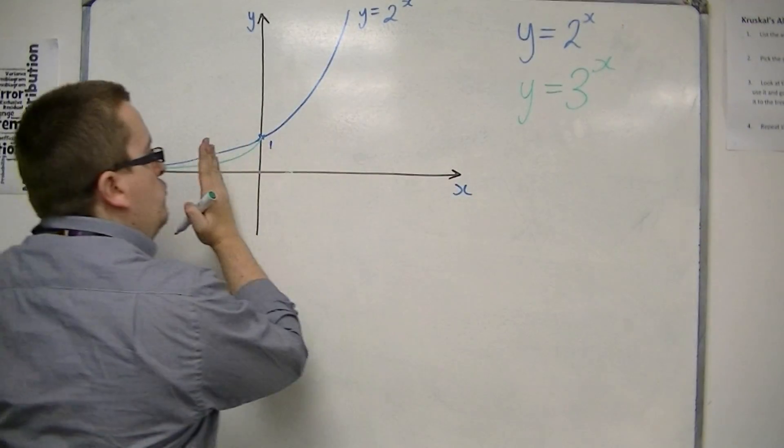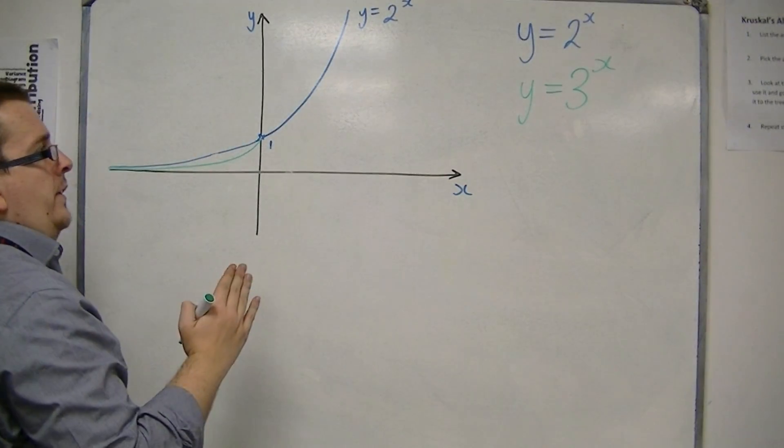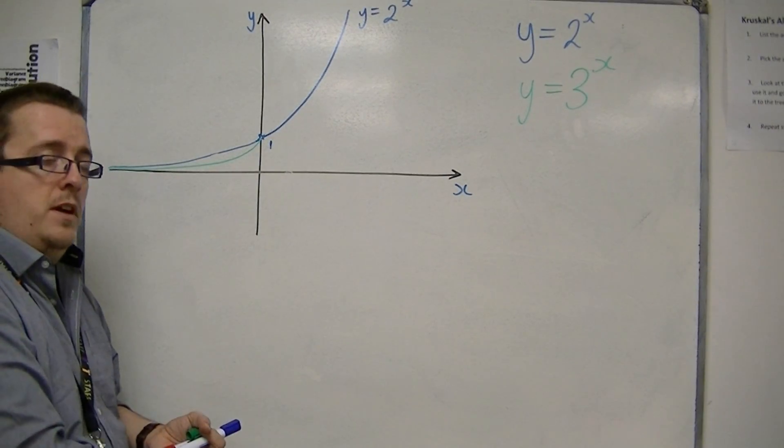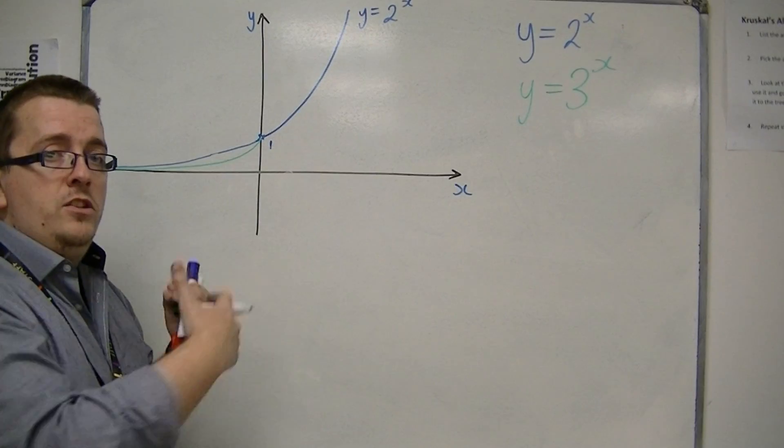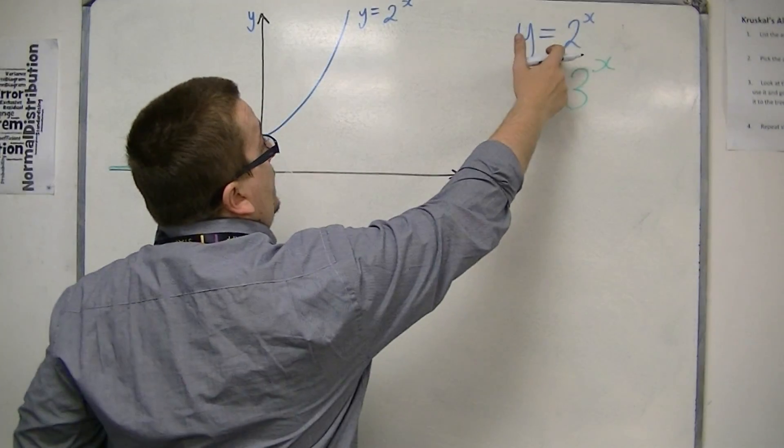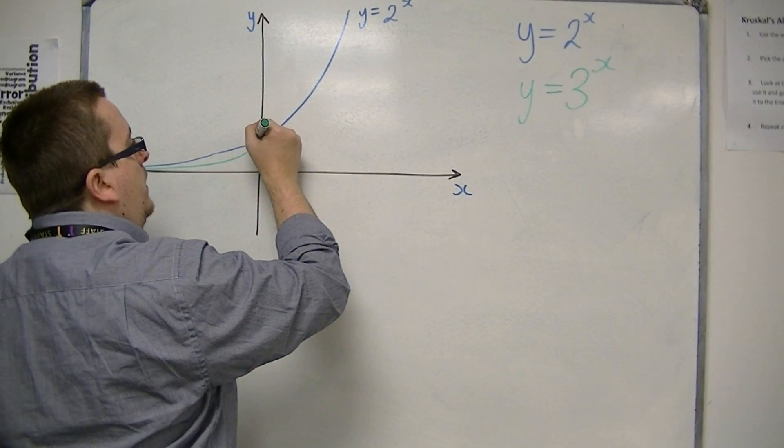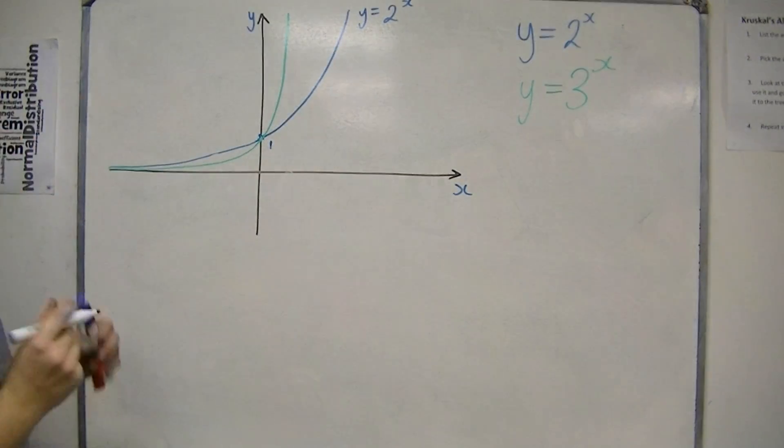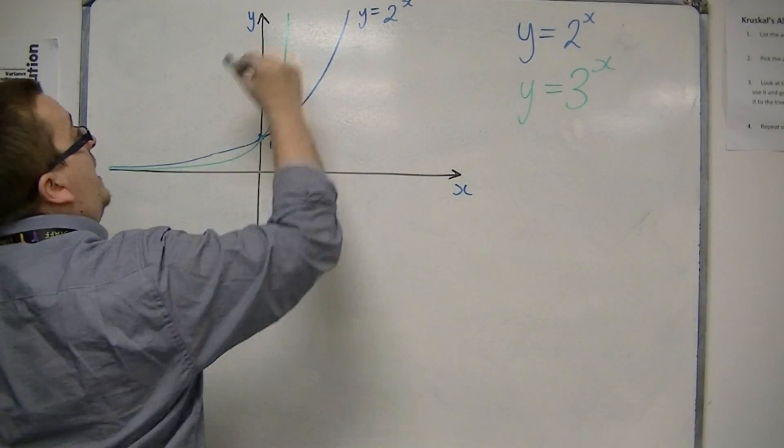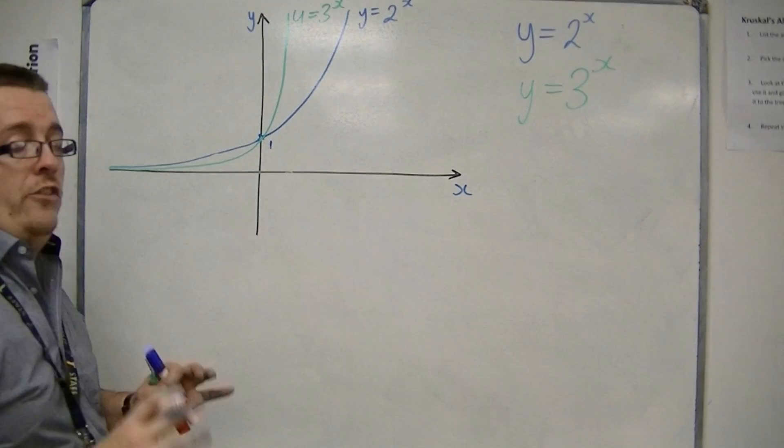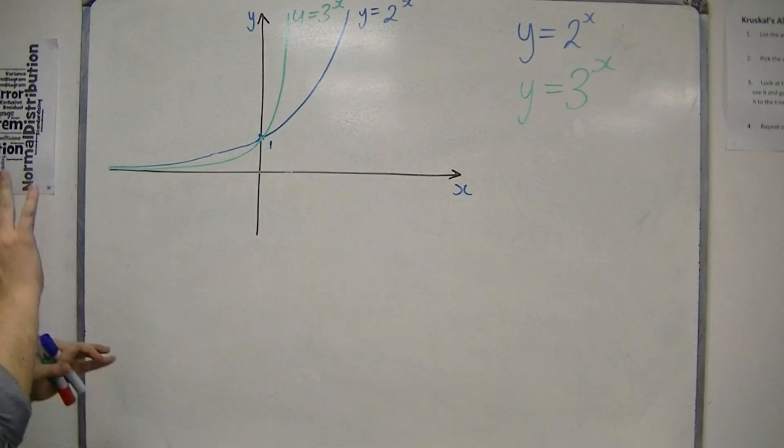But when I go to the right of the y axis, then you've got 3 to the 1, 3 squared, 3 cubed, so you've got 3, 9, 27, 81, and so it's increasing faster than 2 to the x. And so you would expect it to look something like this in comparison to 2 to the x. So it increases exponentially quickly, but even faster than 2 to the x.